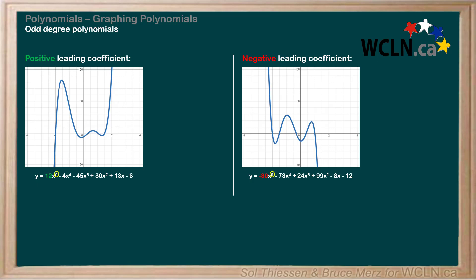As you may know from the lesson on how many roots a polynomial can have, odd degree polynomials start and end in opposite directions, which is why they always have at least one root. This means that if an odd degree polynomial starts down, it ends up — like the example with the positive leading coefficient. And if one starts up, it ends down — like the example with the negative leading coefficient.